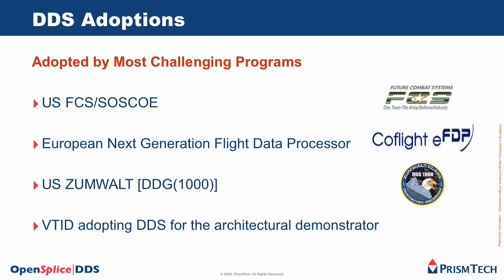In addition, some of the most important projects in their domains adopted DDS even before the associated administration recommended it. Examples are the US FCS SOSCO using DDS for tactical data distribution; the European next-generation flight data processor COFLITE, using DDS for distributing flight data plans internally and between FTPs; ZUMWALT, also known as DDG-1000 or DDX, using DDS within its combat management system; and VITID, using DDS as the key information backbone in its vetronics architecture.